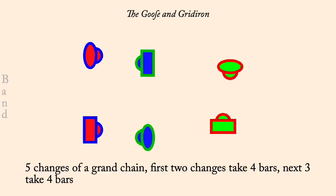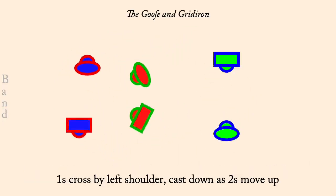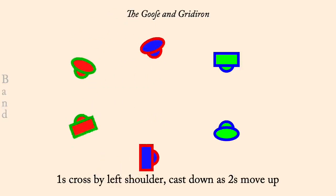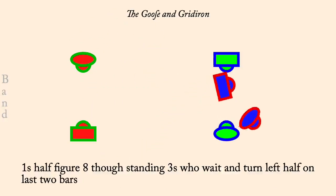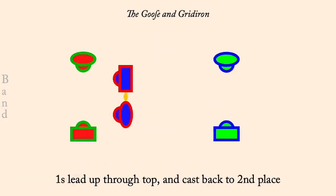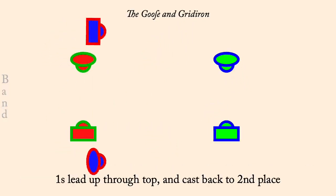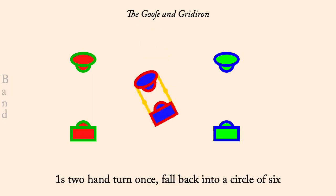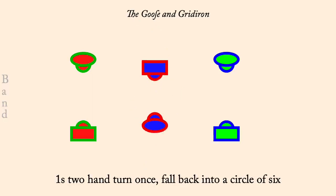Ones cross by left and cast down as twos move up. Ones half figure eight around threes, who then left hand turn half. Ones lead up through twos, cast back to middle. Ones two-hand turn. Two-hand turn half, figure eight around and cast back to middle, circle six and back.